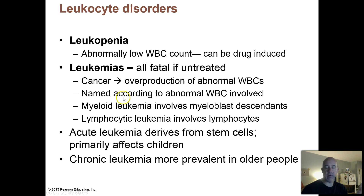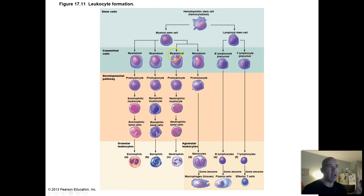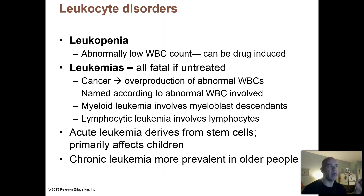The leukemias are named according to the abnormal white blood cell involved. A myeloid or myelogenous leukemia means it's developing from a myeloblast — one of the committed cells derived from a myeloid stem cell. These myeloblasts ultimately develop into mature white blood cells, so if one of these cell types starts dividing out of control, you would have a myeloid type leukemia.